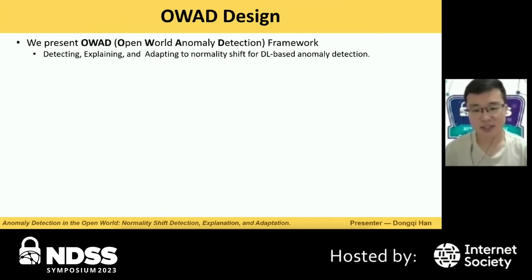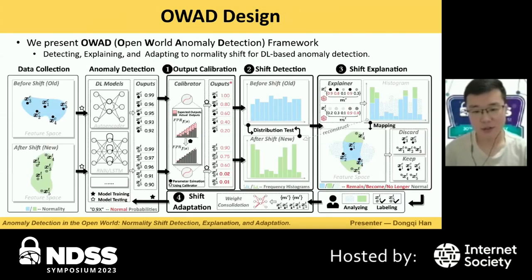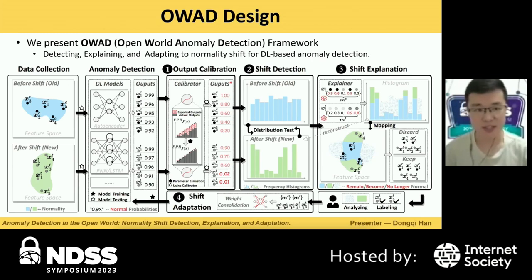With all these insights in mind, we present the Open World Anomaly Detection framework, short for OWAD, to continuously detect, explain, and adapt to normality shift. The framework consists of four steps. I will introduce the basic idea of OWAD with a toy example.